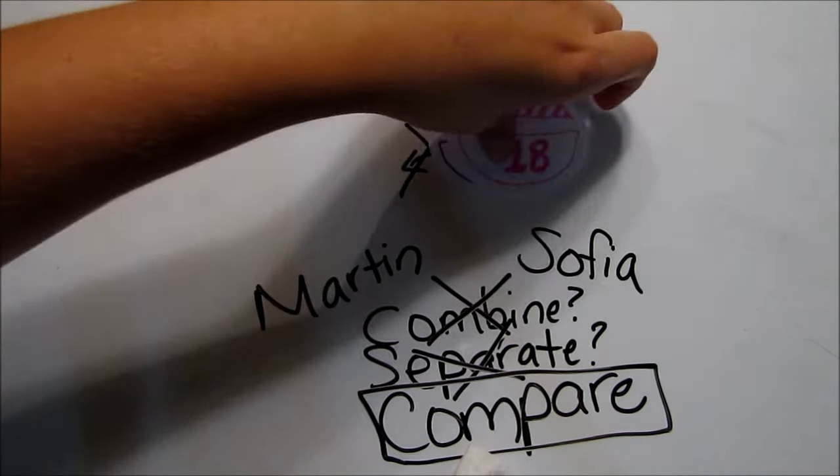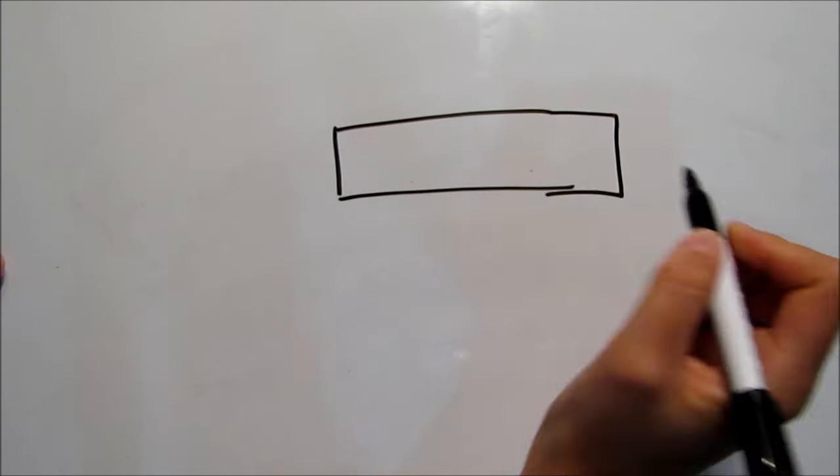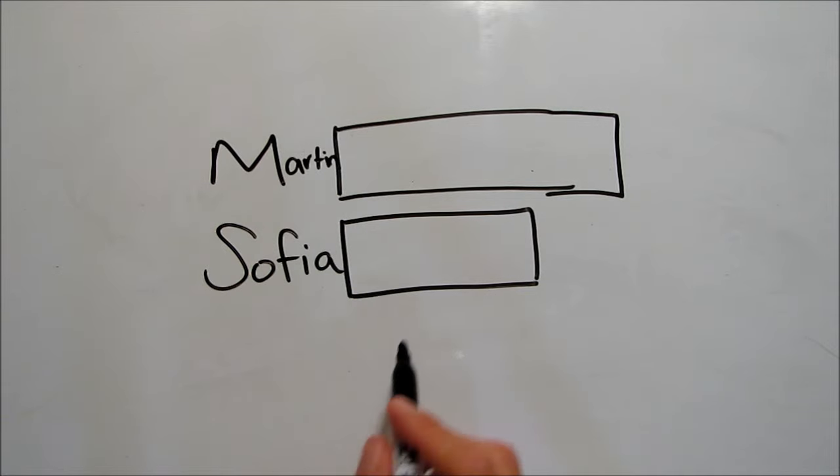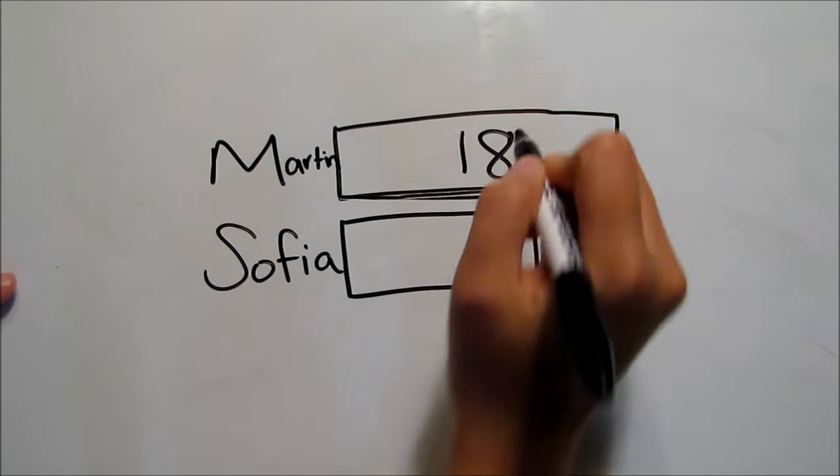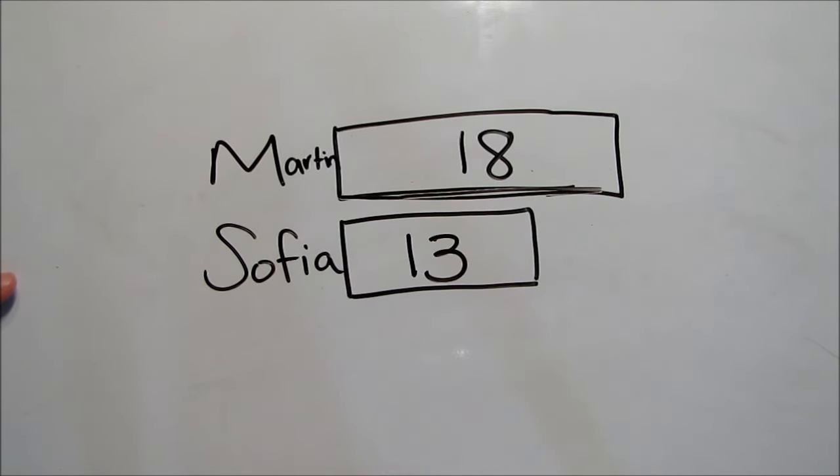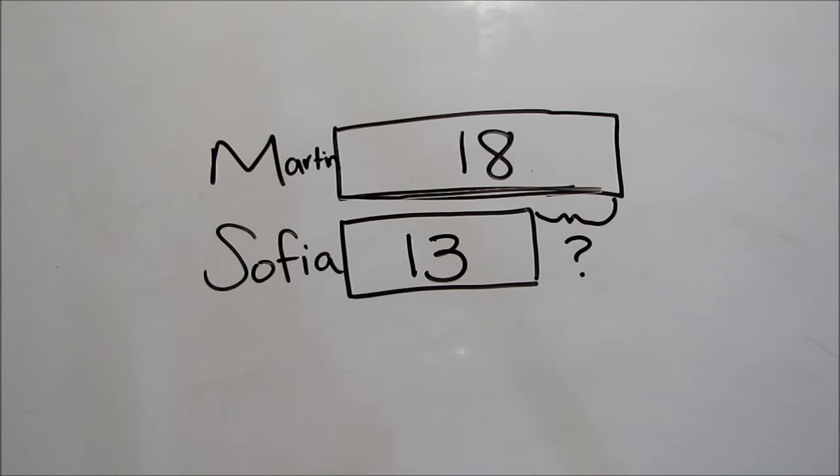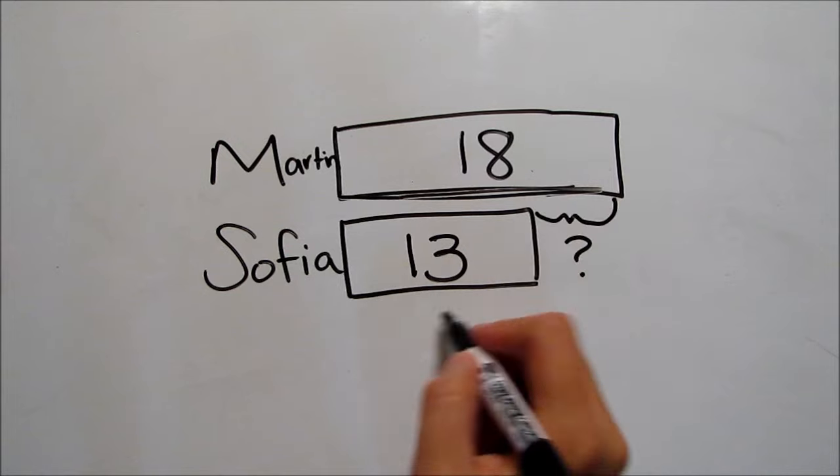A comparison strip diagram has no total bar, but it does have two strips. For this problem, we'll label one strip Martin and the other Sophia. Now, Martin's strip is bigger because he has more boats, 18 to Sophia's 13. What we're trying to find out is this part, the number that Martin has that Sophia doesn't. To find that, we'll subtract.